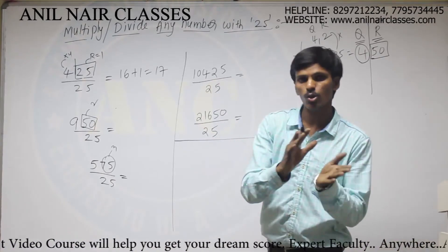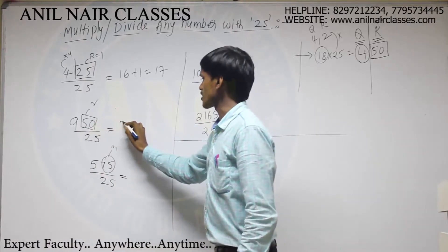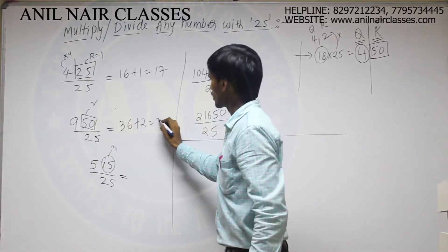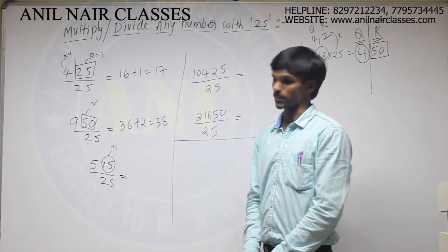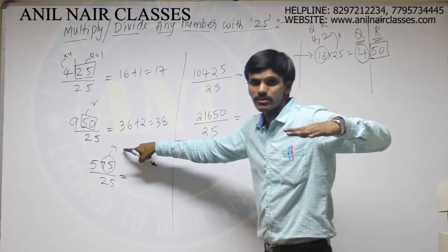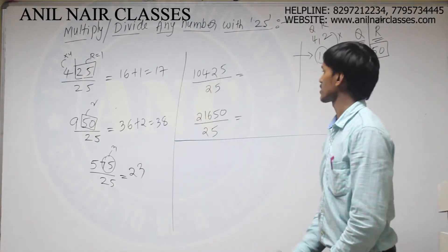Now let us try to answer the questions directly. So multiply 9, 9 times 4 is 36. 50 indicates the remainder 2. 38 will be the direct answer. 5 times 4 is 20, remainder will be 3. 20 plus 3. 23 times it will get cancelled.